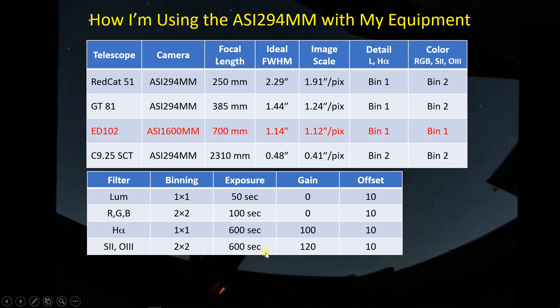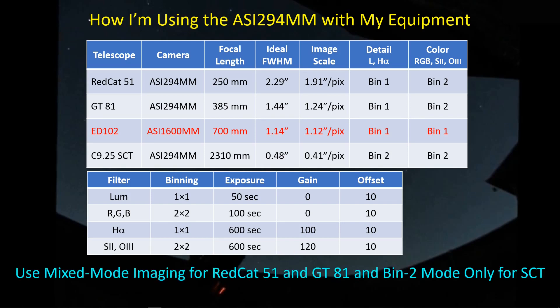There isn't much question about the gain when you go into BIN-2 mode. You definitely want to, whenever possible, take advantage of Gain 120, because that's when the high conversion gain kicks in and your dynamic range goes back up to what it would be at Gain 0, but you also get the benefit of low read noise at this gain level. So this definitely makes all the sense in the world when shooting S2 and O3 for color to use BIN-2 mode and a gain of 120. We're using mix mode imaging for the Red Cat 51 and GT81, and BIN-2 mode only for the SCT to take advantage of better tonal resolution without loss of spatial resolution, because we're still oversampled with that bin pixel size.